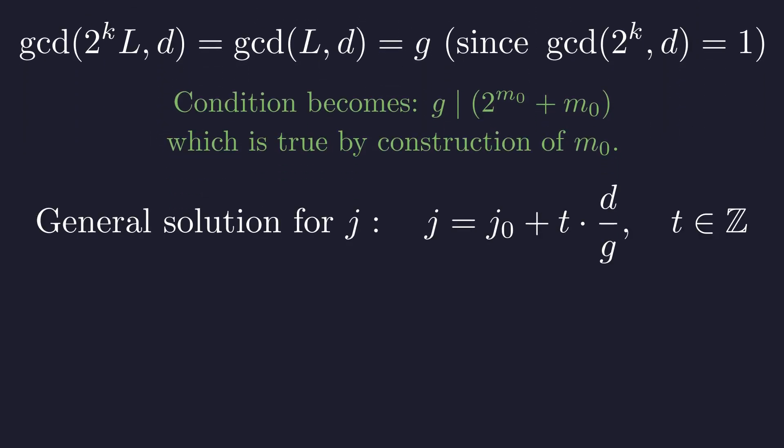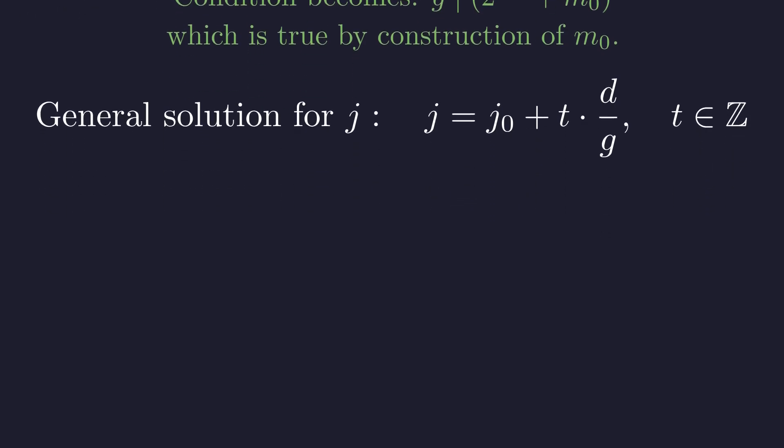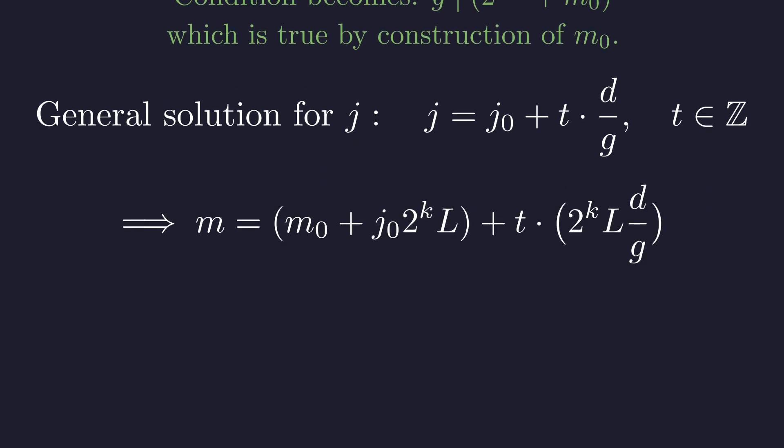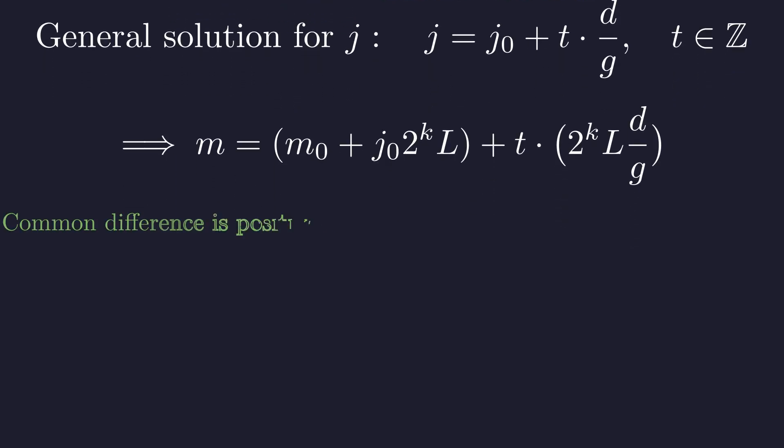The theory of linear congruences states that the general solution for j forms an arithmetic progression. Substituting this back shows that m itself must form an arithmetic progression. Since the common difference is positive, we have an infinite set of solutions for m that we can make arbitrarily large. This completes the inductive step.